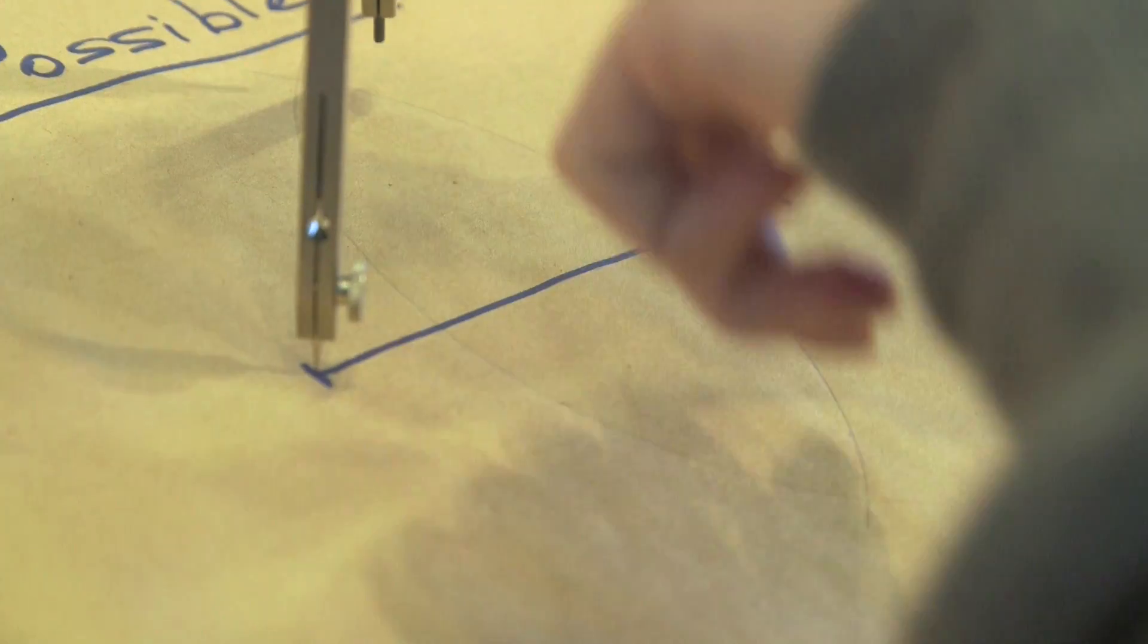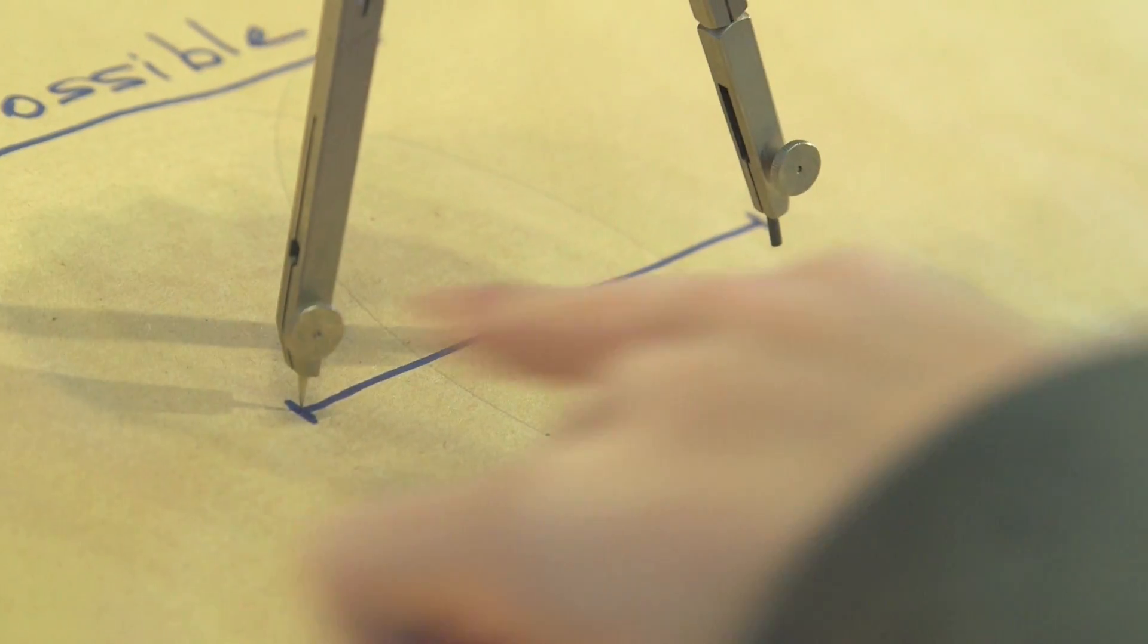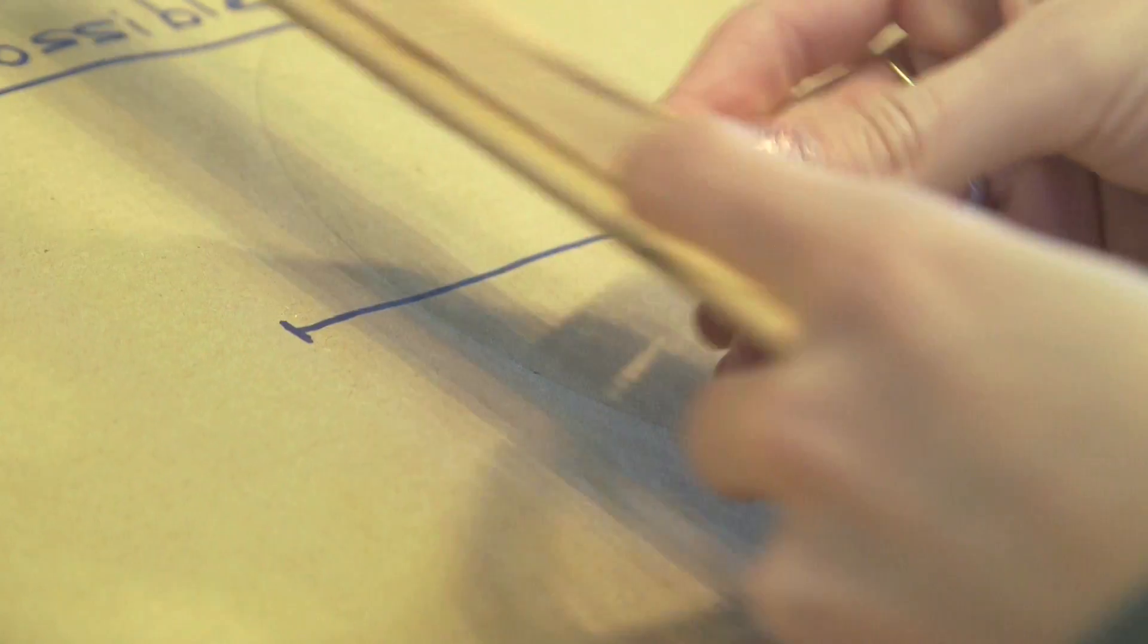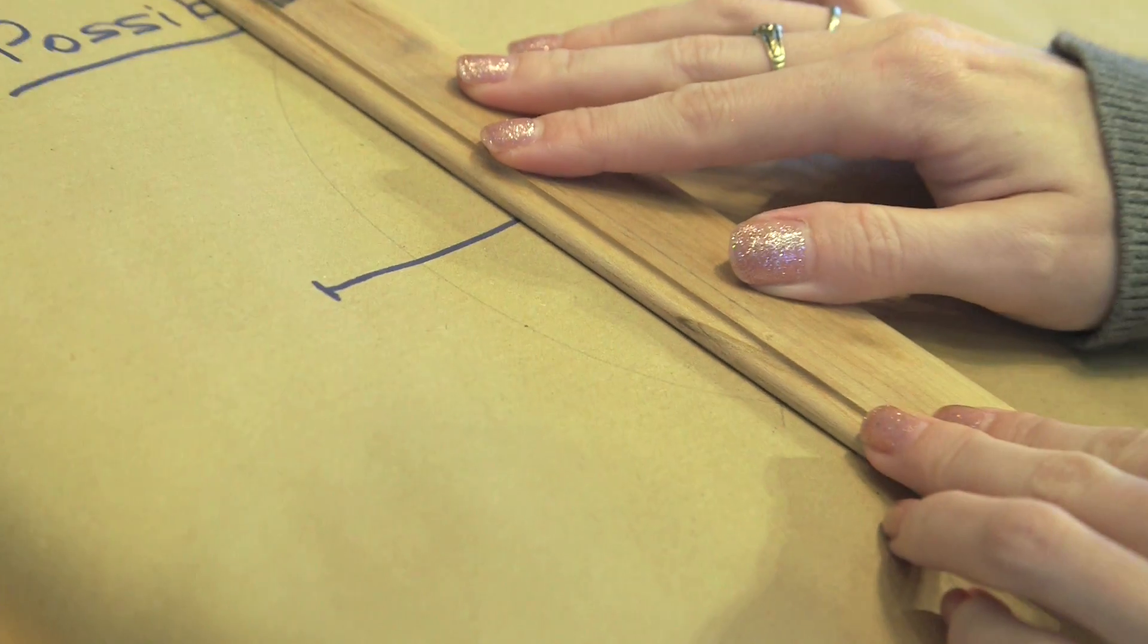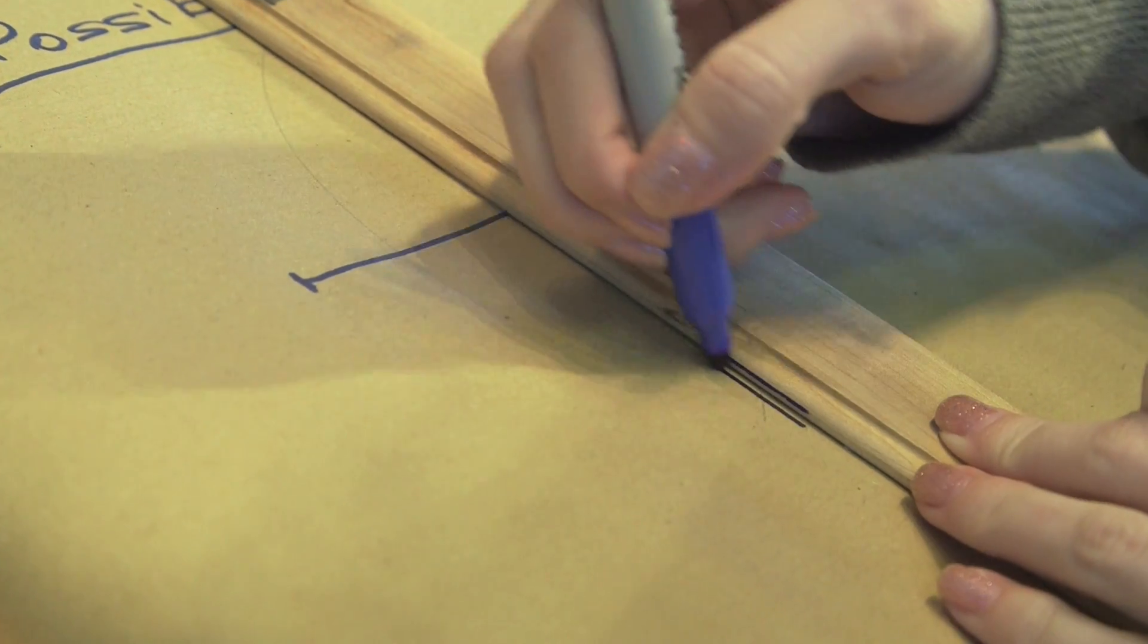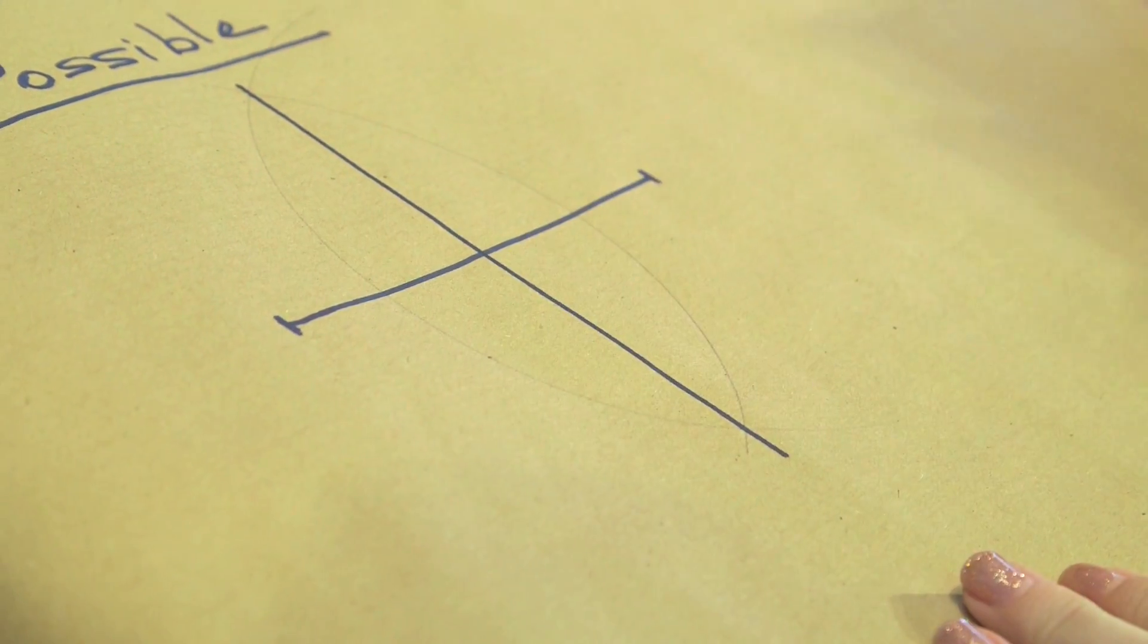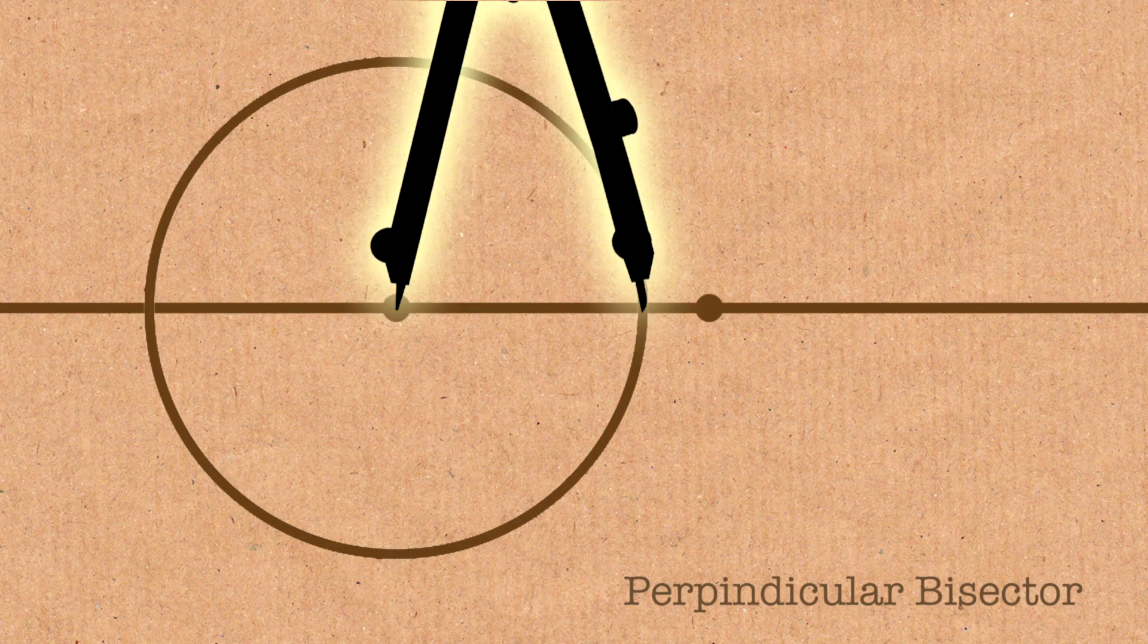The important part is that the radius of the circle, the width of the compass, was the same when I do it from the left and when I do it from the right. Then take the straightedge and connect the two points where those arcs intersected. They will intersect because I opened the compass wide enough to be wider than half. And then this line is a perpendicular bisector of that.